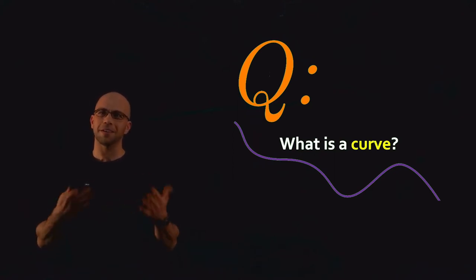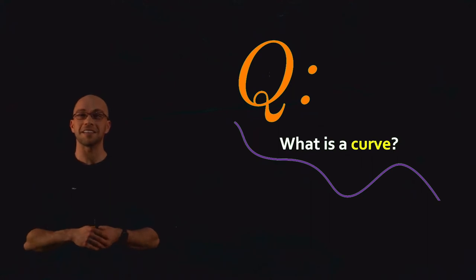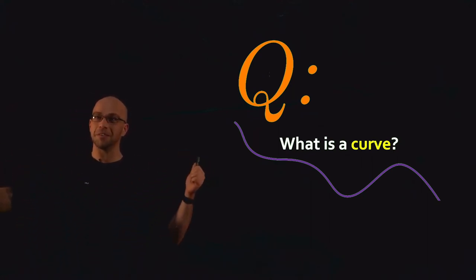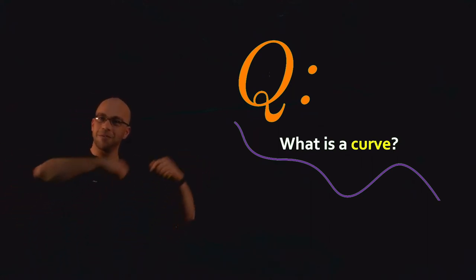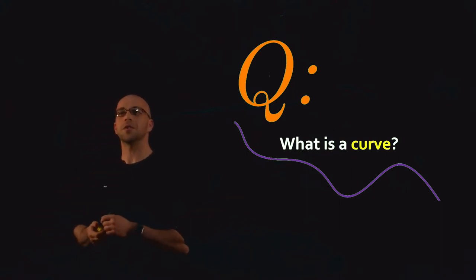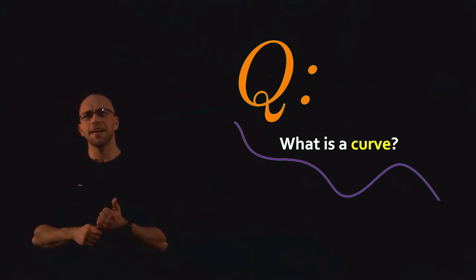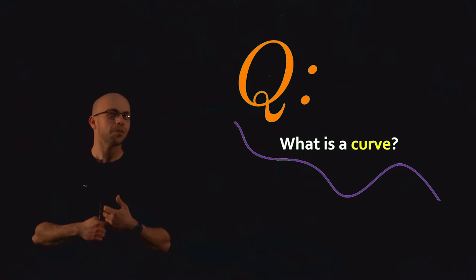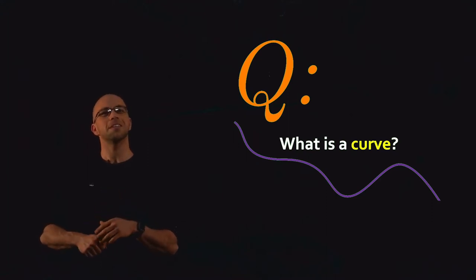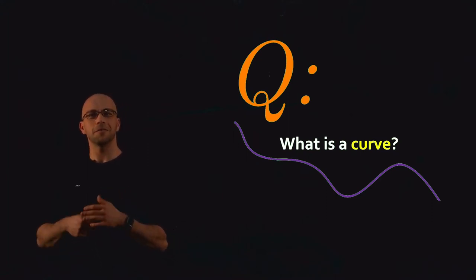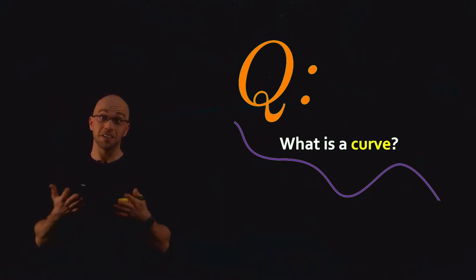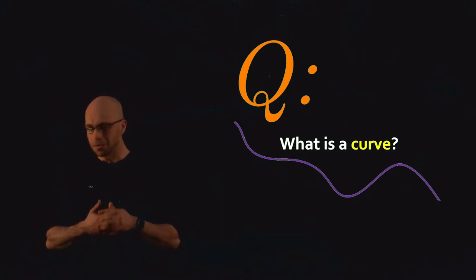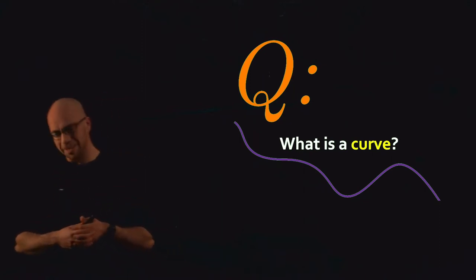Usually, we think of curves as a function f(t), where t is a one-dimensional variable — we think of it like time — and f(t) is some position in 2D or 3D. That's a reasonable definition from a calculus perspective, but we're going to see that functions f(t) don't necessarily trace out objects that look one-dimensional. In fact, they could be zero-dimensional, or they could have non-differentiable features, which in differential geometry is against the rules.